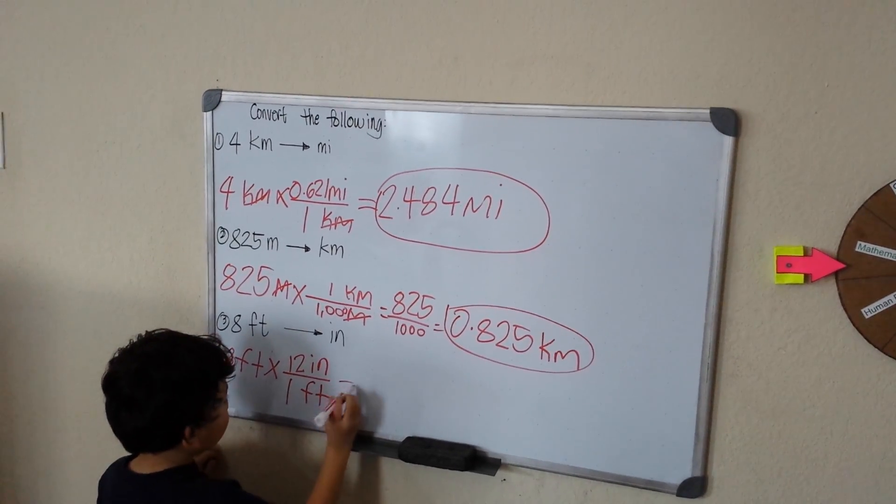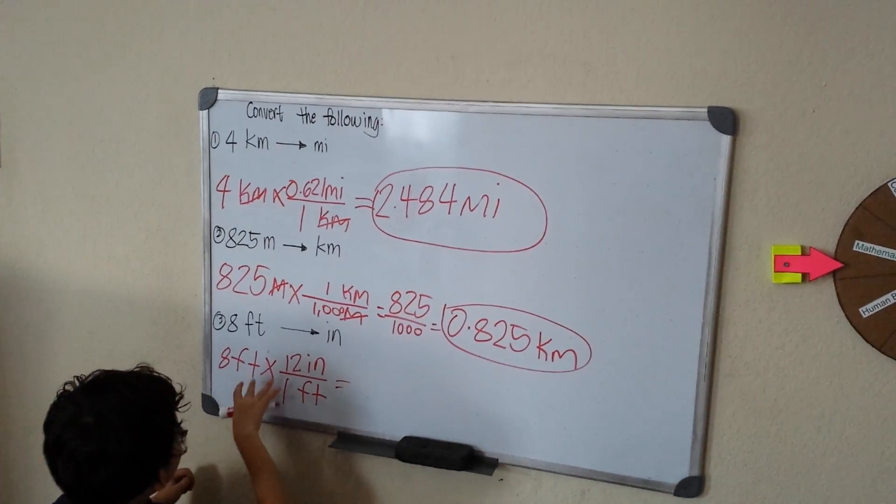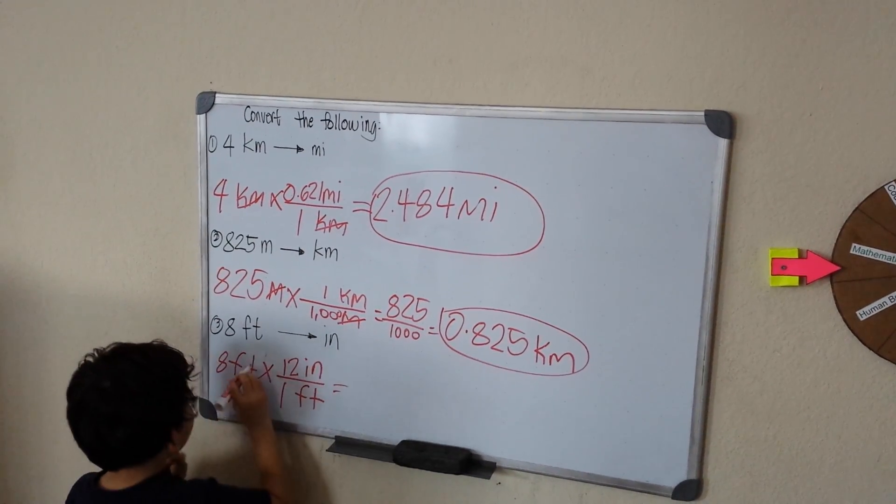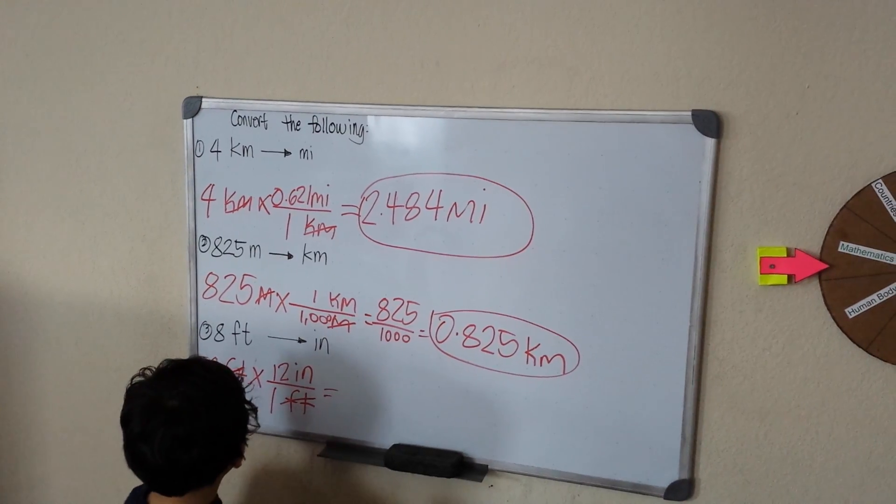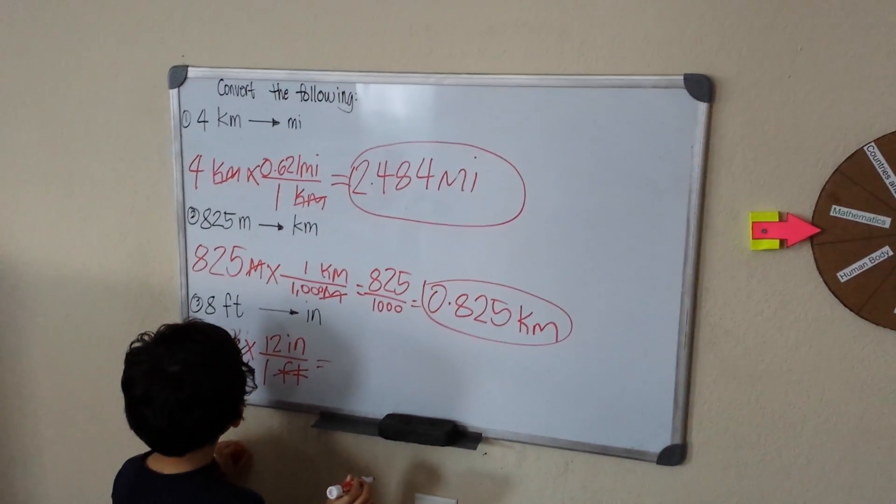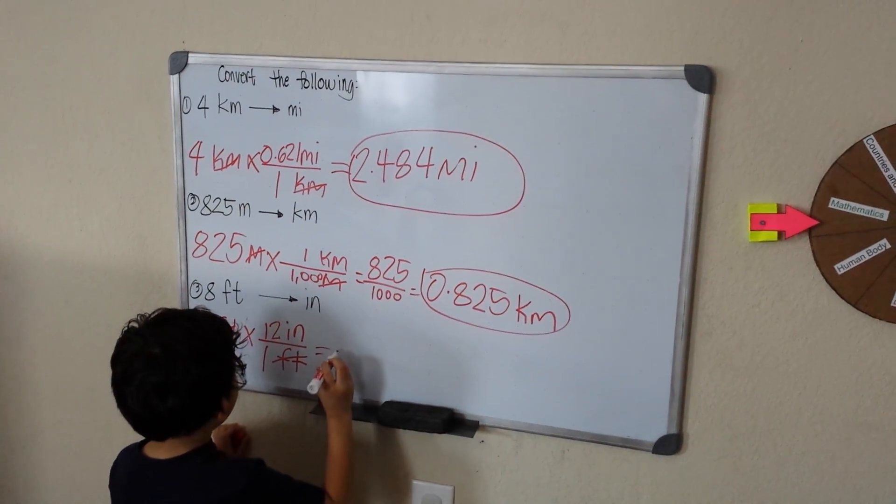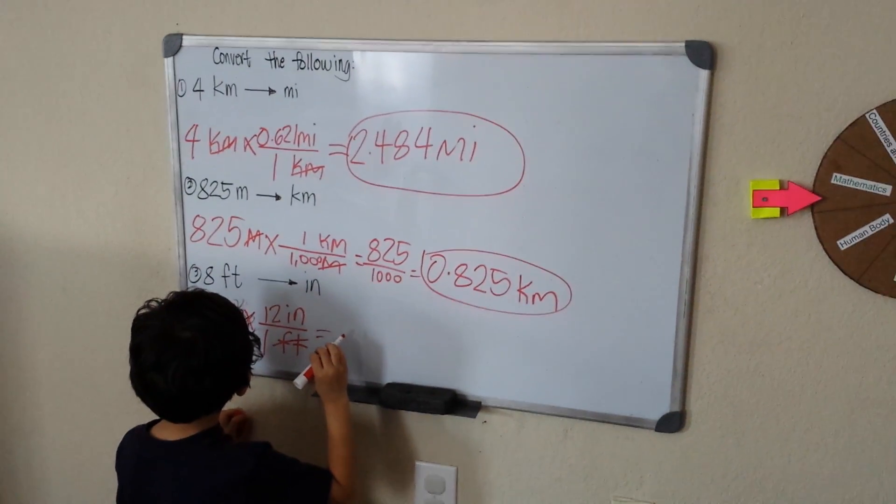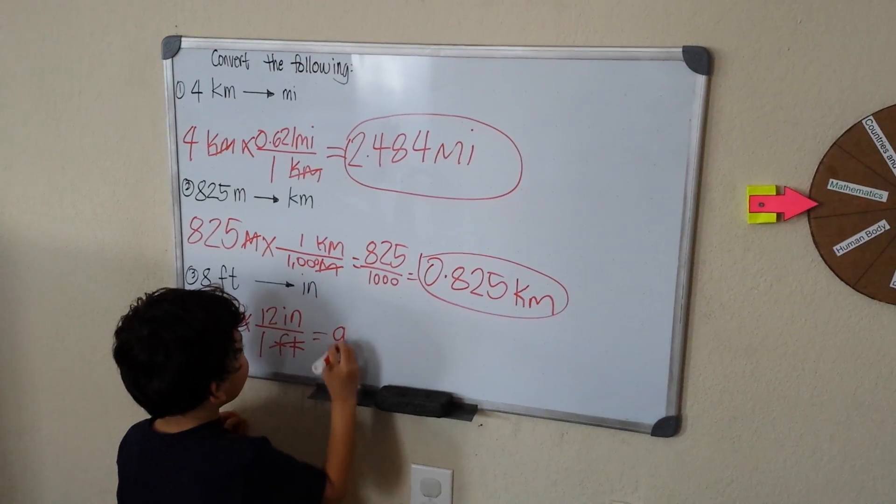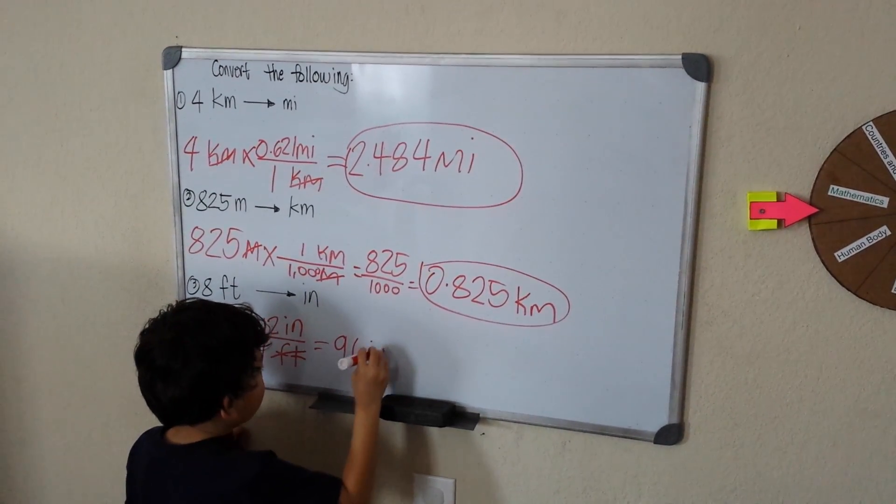So, I want to divide these two, but first I'm going to cross this too. So, 8 times 12 is, that will be, let me think. Oh, it's 96. I know, 96 inches.